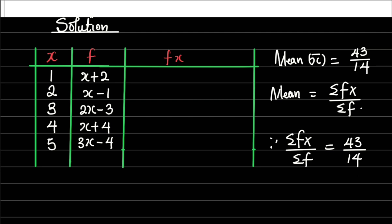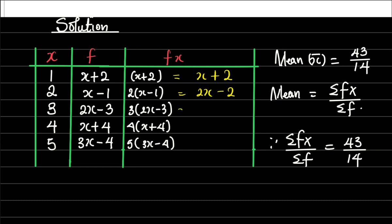We are moving. Now we need to get the column fx which is f times x. Now this is what I'm going to do: 1 times x plus 2 is going to be x plus 2. 2 times x minus 1, I have 2 into x minus 1. The next I have 3 into 2x minus 3. The next I have 4 into x plus 4. I want to believe you are following me and you know what I've done. So to express it better, this will be x plus 2. The second, once I expand the bracket, I'm going to have 2x minus 2. The third I'm going to have 6x minus 9. The fourth I'm going to have 4x plus 16. Then the fifth I'm going to have 15x minus 20.